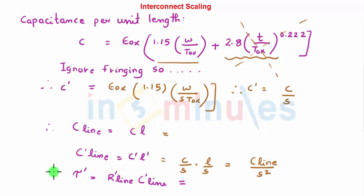So my total delay after scaling of width and length of my interconnect surface scaling I get is nothing but Rline remains as it is, Cline gets reduced by S². So after scaling of my interconnect my delay gets reduced by S² which is quite good.